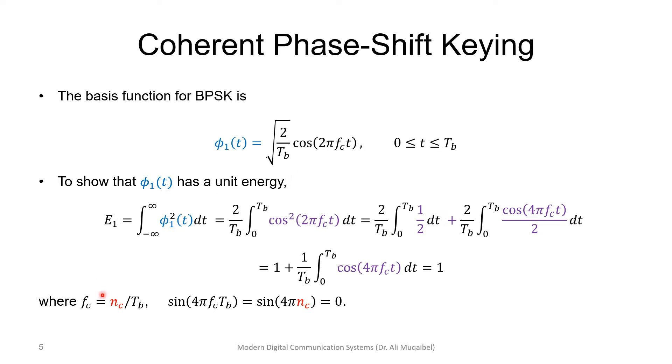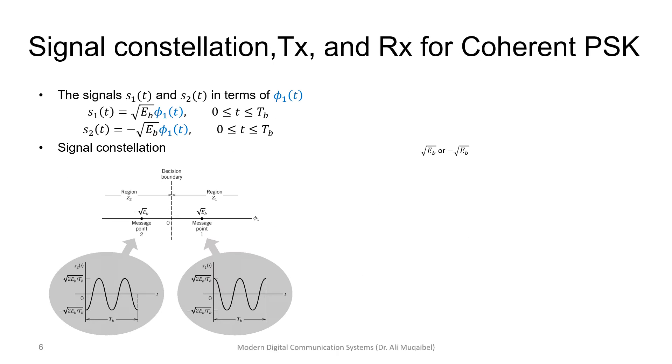Of course, you know that this is going to be 0 because we are integrating over multiples of the period. We make sure that Fc is multiples of the period. And, of course, integration of cosine is sine, and that is guaranteeing that we get 0.